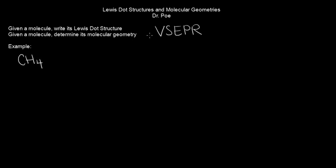Basically what VSEPR says is that electrons try to get away from each other. In order to understand that, we need to look at where the electrons are. Lewis dot structures look at the number of valence electrons, and we can ignore everything else, because the valence electrons are really what's used in bonding.